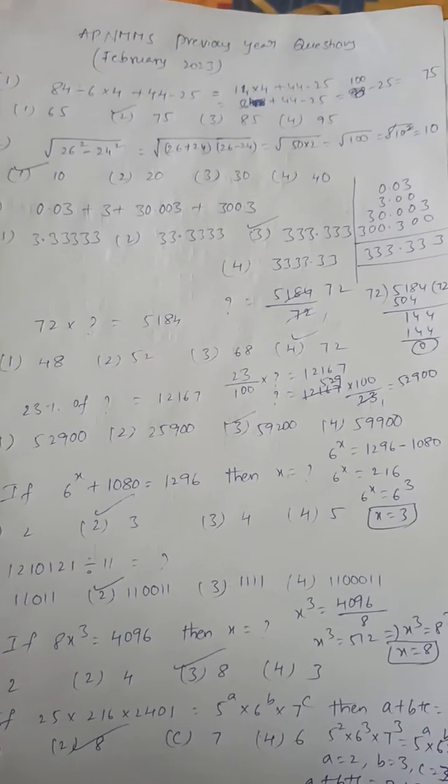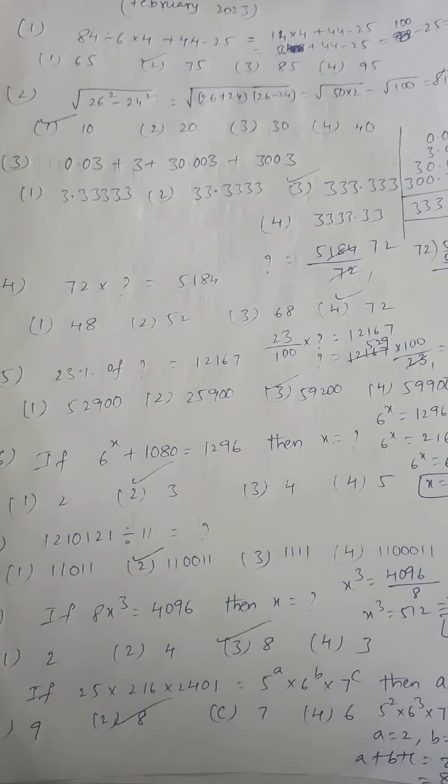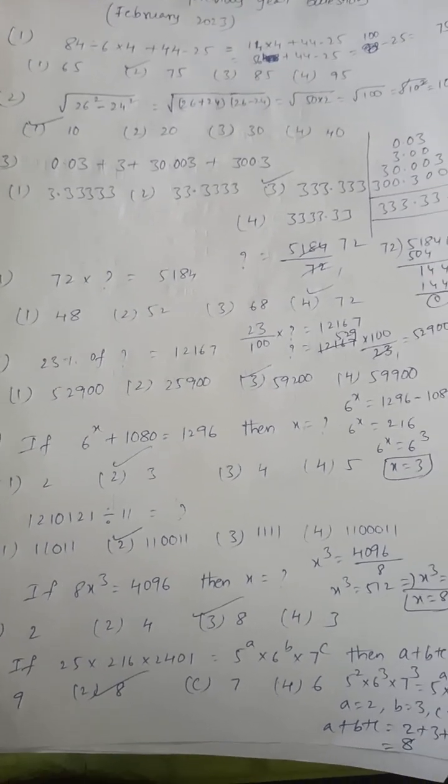Next: 0.03 plus 3 plus 30.003 plus 30.03. Here we get 33.333, so the answer is option 3.